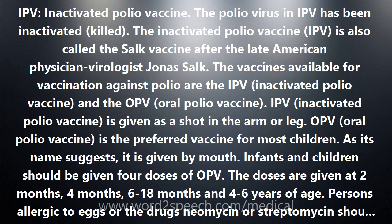The vaccines available for vaccination against polio are the IPV, inactivated polio vaccine, and the OPV, oral polio vaccine. IPV, inactivated polio vaccine, is given as a shot in the arm or leg.